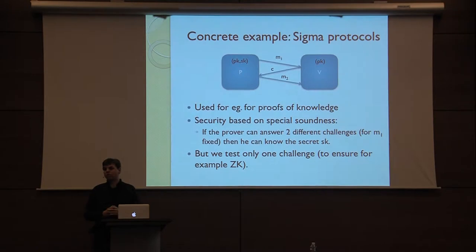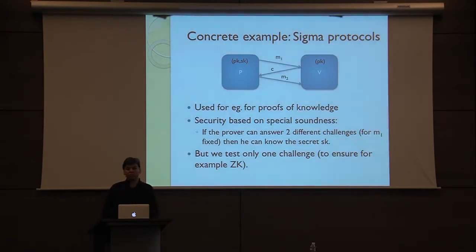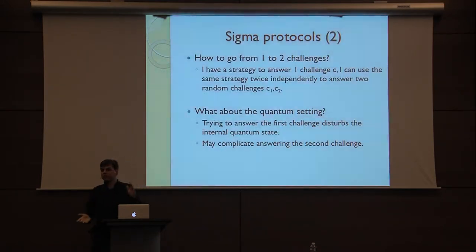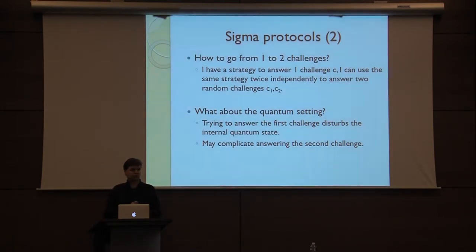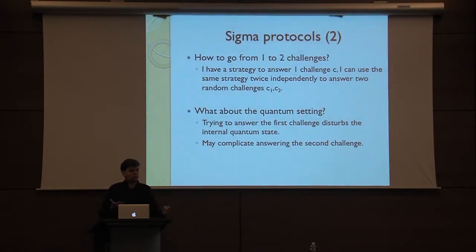Of course the verifier could send two challenges and tell the prover to answer both, but then the verifier would also be able to extract the secret key. So the verifier will only send one challenge, and somehow this will be enough to prove that the prover knows the secret key without revealing any information about it. These are quite well-known and pretty nice results. So there is this difference between one challenge and two challenges. Normally it's very simple: you have an algorithm that answers one challenge, so if you ask two, you apply the algorithm for the first challenge and then for the second challenge and you get the answer to both.